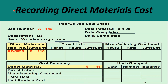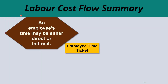Recording direct materials costs to a job — it is recorded on the job cost sheet, or the work in process account, that the materials are issued through. There is a space on the job cost sheet reserved for direct materials. A job cost sheet has records for direct materials, direct labor, and manufacturing overhead. There is also a cost summary showing all three elements of cost, the total cost, and the unit product cost if more than one unit is being produced.